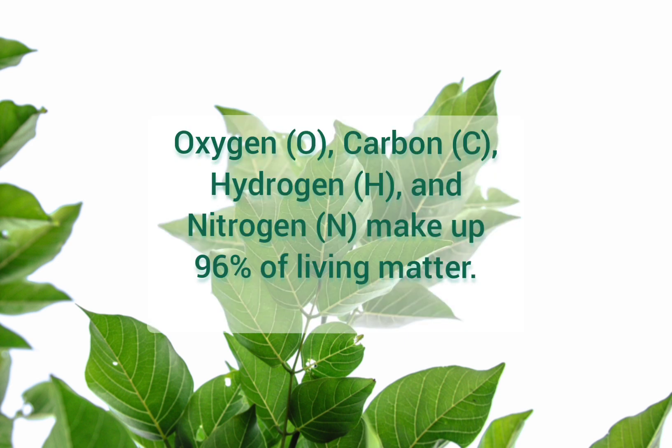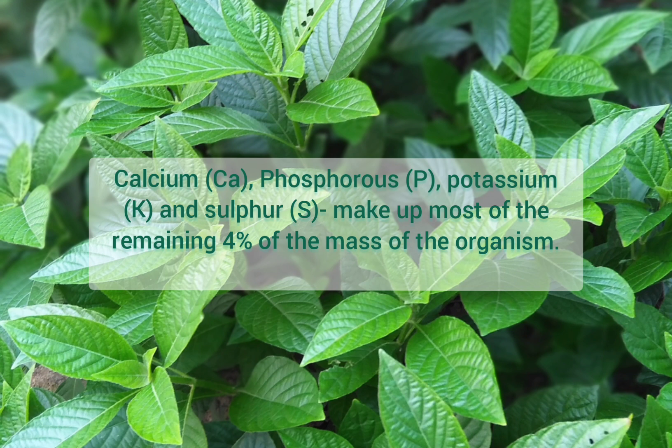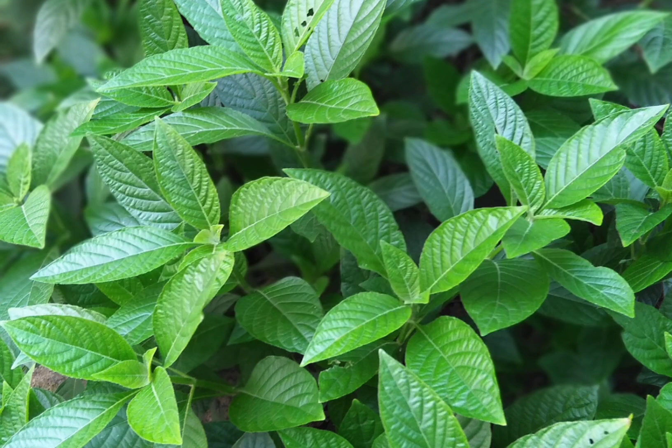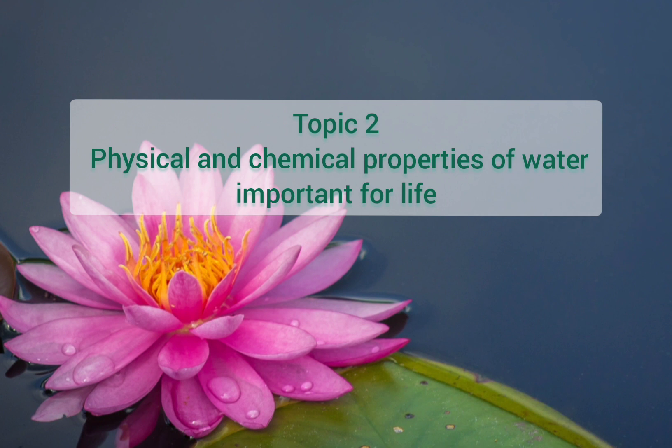Oxygen, carbon, hydrogen, and nitrogen make up 96 percent of living matter. Calcium, phosphorus, potassium, and sulfur make up most of the remaining 4 percent of the mass of the organism. In humans, carbon, hydrogen, oxygen, and nitrogen account for 96.3 percent of the body mass. Calcium, phosphorus, potassium, sulfur, sodium, chlorine, magnesium, and trace elements account for the remaining 3.7 percent. Examples of trace elements include boron, cobalt, copper, chromium, chlorine, iodine, iron, molybdenum, manganese, selenium, silicon, tin, vanadium, and zinc.